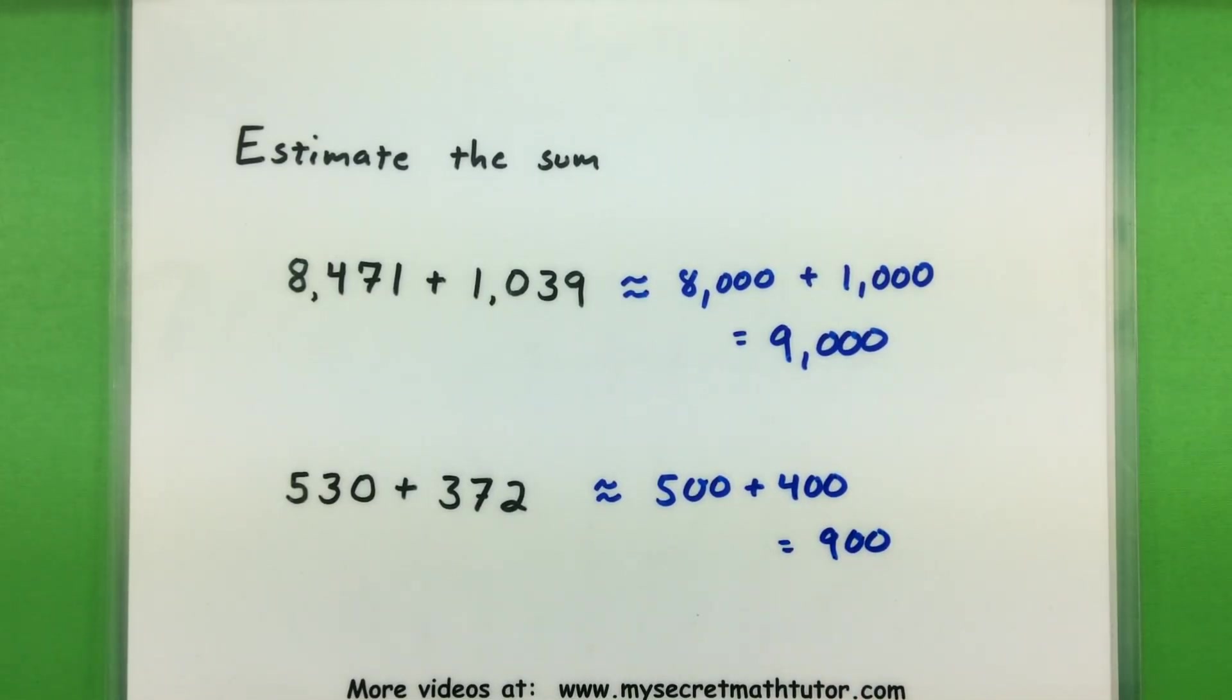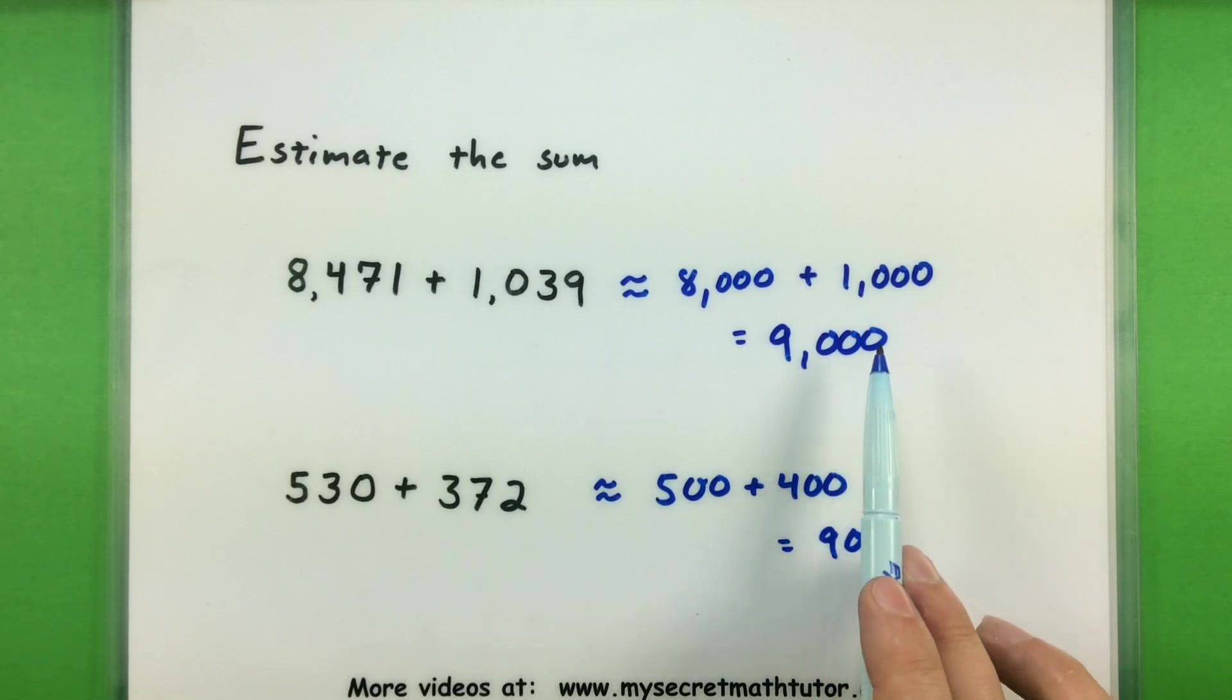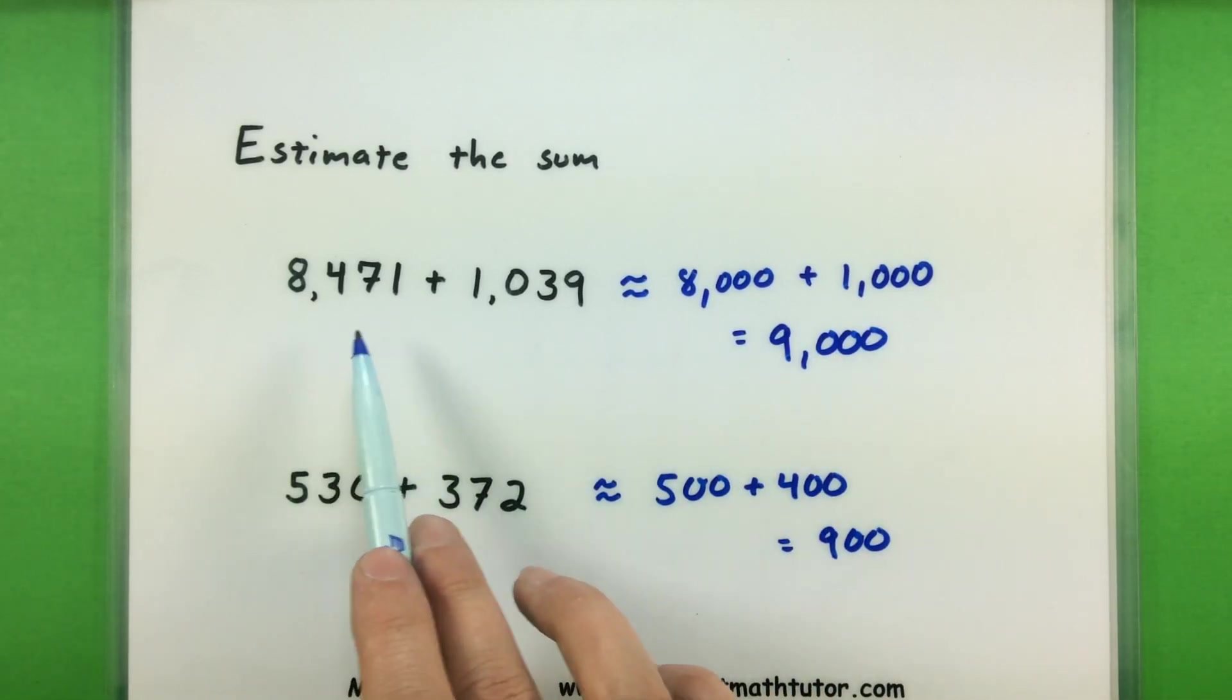So as you can see, it's a fairly simple process. Remember to round both of the individual numbers first. Once you have those rounded numbers, go ahead and add them. Most of the numbers will be zero, so that should be nice and quick. And also remember that this answer is not the true answer of this sum. It is simply called an estimate of this actual sum over here.